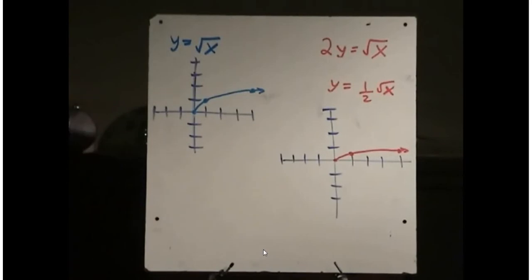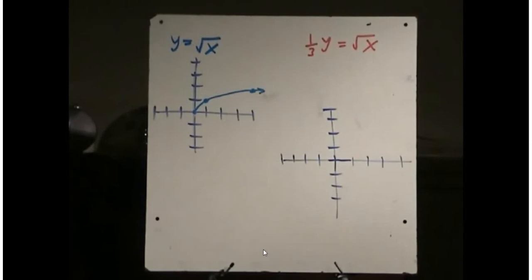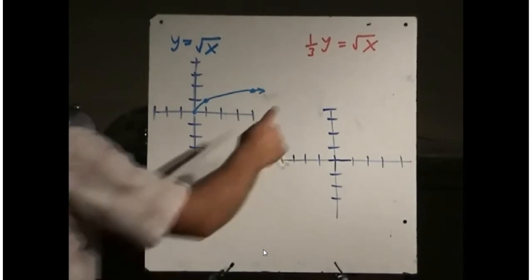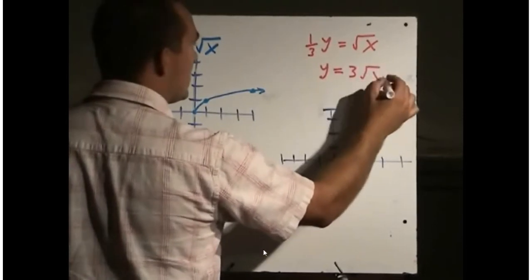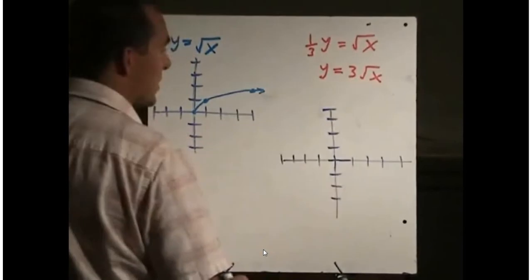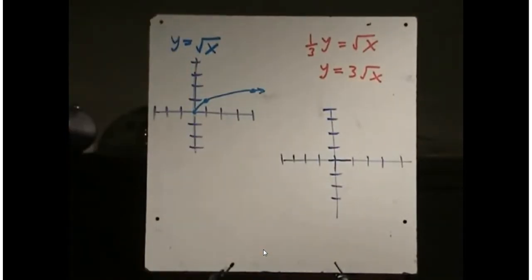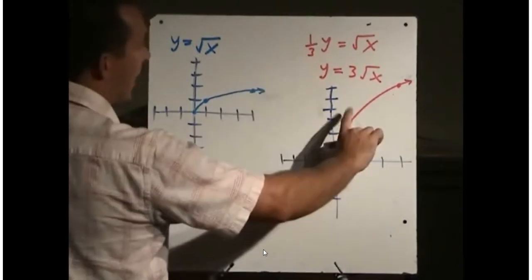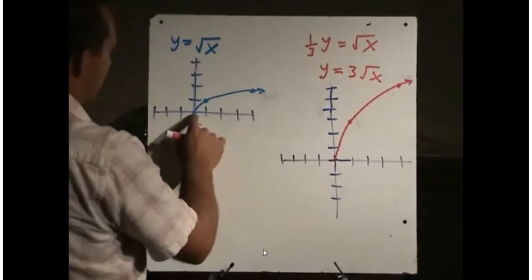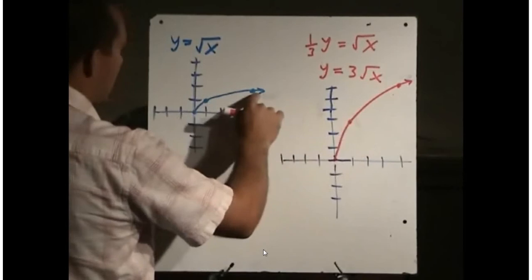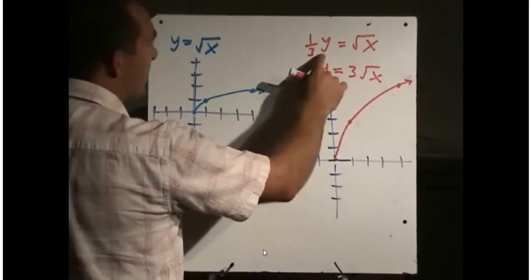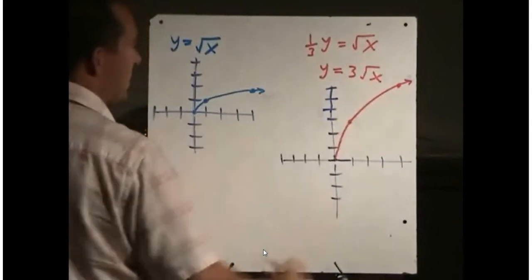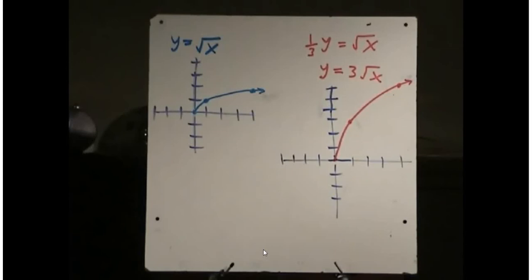Let's see what happens if we replace y with a fraction such as one-third y. Replacing y with one-third y gives the equation one-third y equals the square root of x. To enter it in the graphing calculator, we multiply by 3, giving y equals 3 times the square root of x. Here is the graph. When we replace y with one-third y, the graph expands vertically by a factor of 3. Zero times 3 is still 0, but 1 times 3 is 3, and the y value of 2 is now at 6.